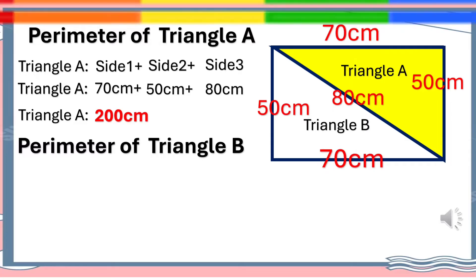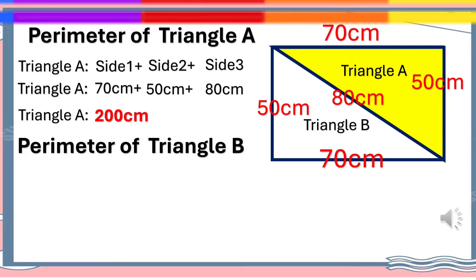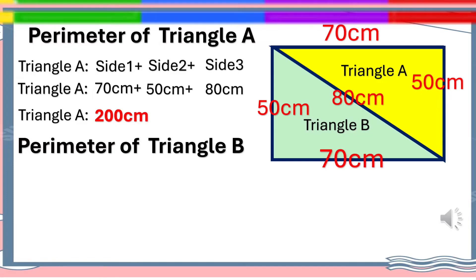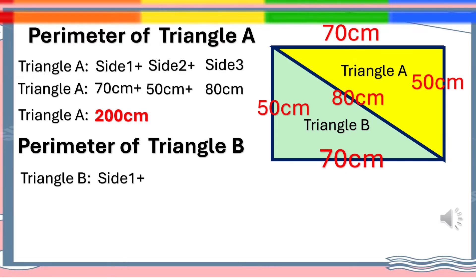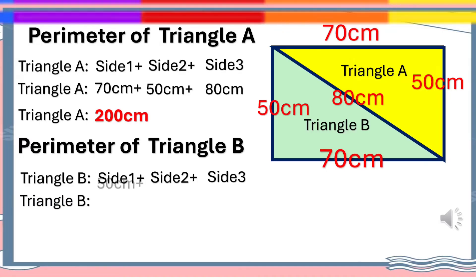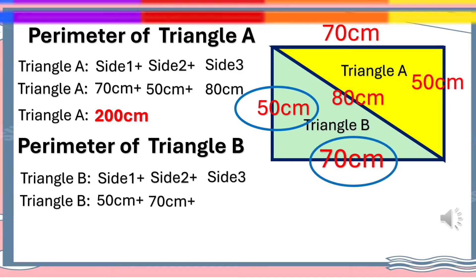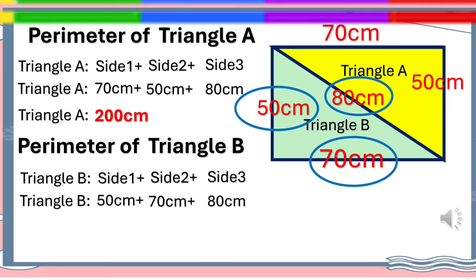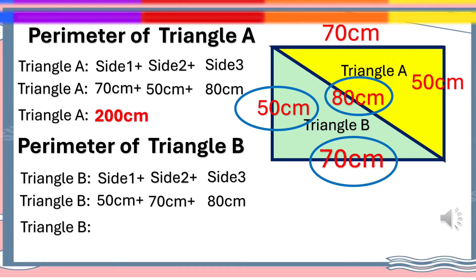We use the same process in solving the perimeter of Triangle B. Triangle B also has no equal sides, so we use the same formula: Triangle B equals side 1 plus side 2 plus side 3. Triangle B equals 50 cm plus 70 cm plus 80 cm. Adding these together, the perimeter of Triangle B is 200 centimeters.